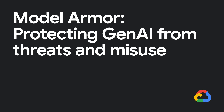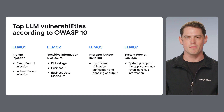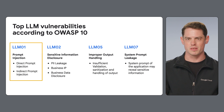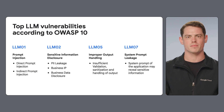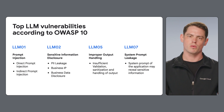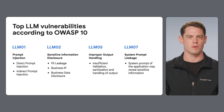The solution? Model Armor. Model Armor helps you fight real threats of AI. These include common issues from the OWASP LLM Top 10, such as prompt injection, where attackers trick your model into revealing secrets, and data exposure, where sensitive information slips through. In this video, we'll explore Model Armor's key features, benefits, and how it can protect against threats like prompt injection and data exposure.